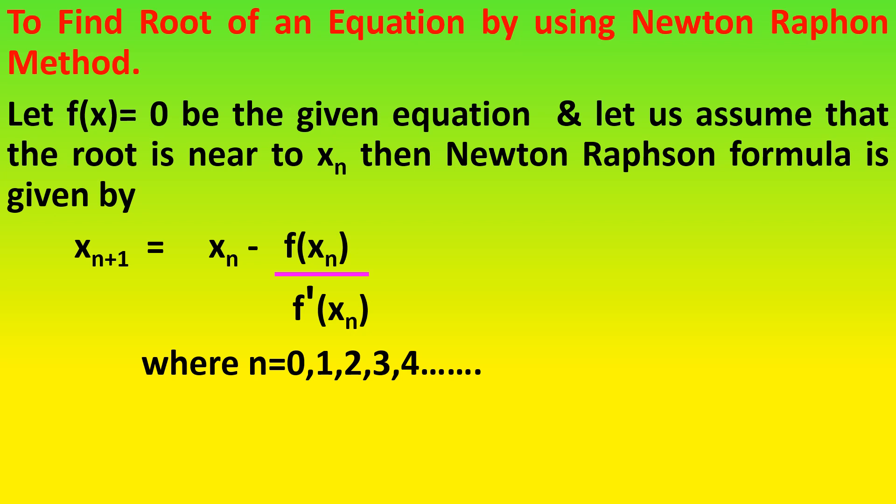The formula is xn+1 equals xn minus f(xn) divided by f dash of xn. Here, you need to consider the division only for f(xn), not for the whole expression. That is, it is xn minus, and then the division only applies to f(xn) divided by f dash of xn. While solving problems, be careful.